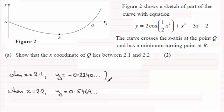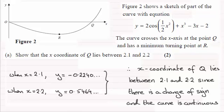All we need to do now is take these results and say that the x-coordinate of Q lies between 2.1 and 2.2, since there's a change of sign and the curve is continuous. There are no breaks in the curve across that interval, and that should be sufficient.